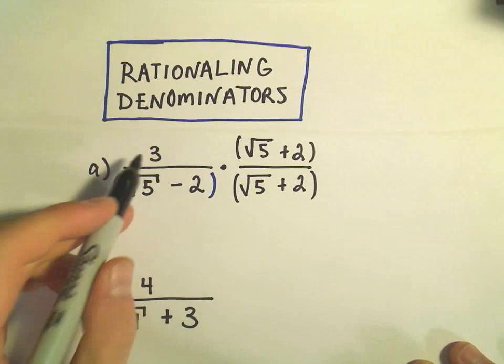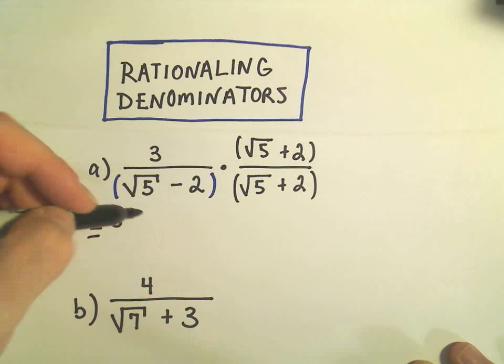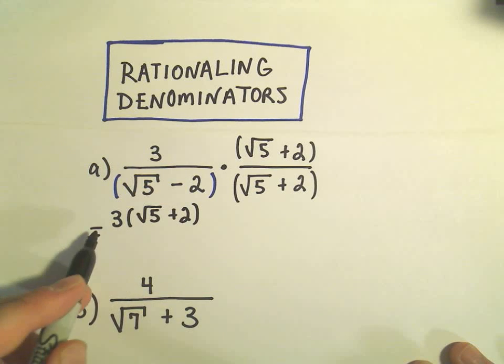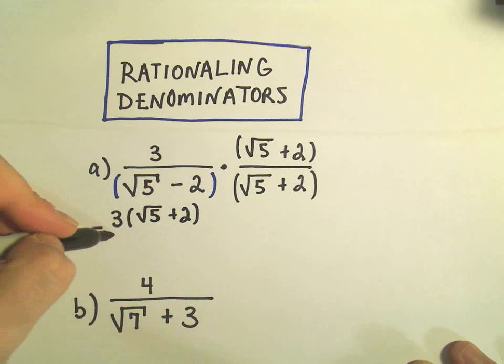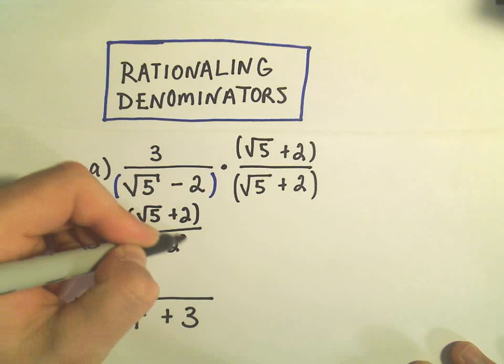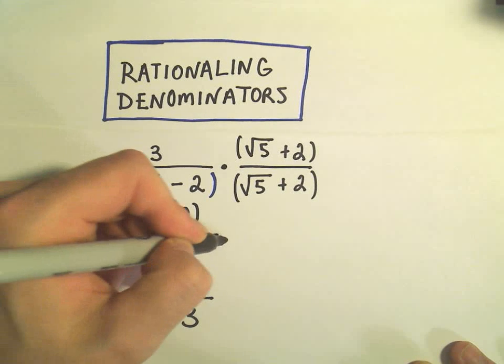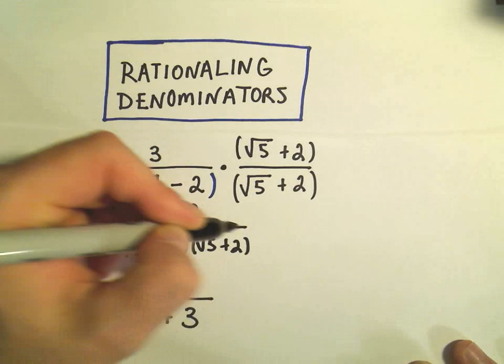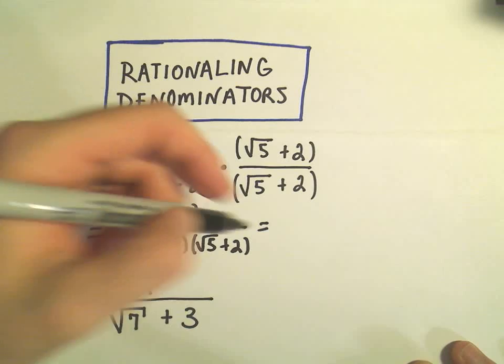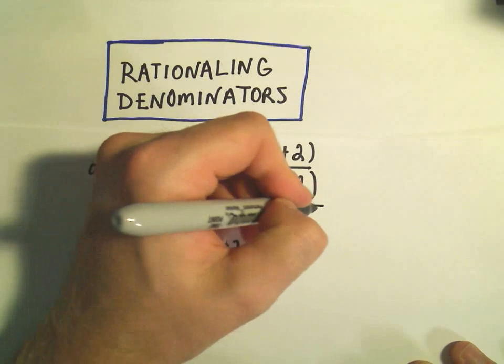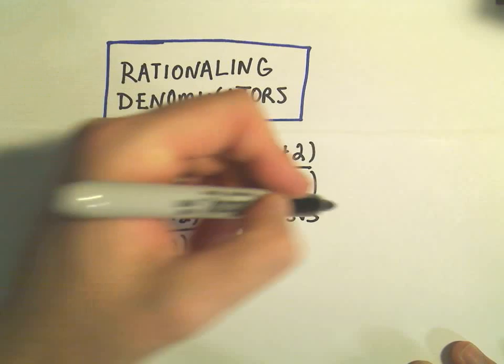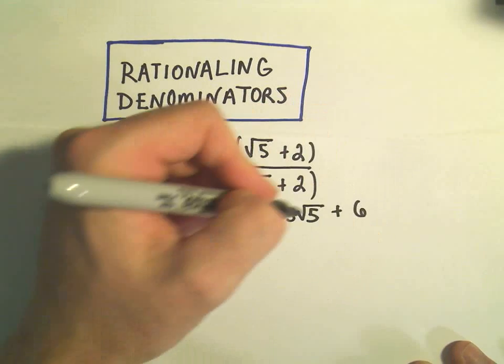So I'm going to write it one time. So when we multiply fractions, we just take the top, we just multiply what's on top. So 3 times the quantity root 5 plus 2, and then we just multiply what's on the bottom. Root 5 minus 2, root 5 plus 2. And we have to be careful here, we'll have to distribute. So 3 times root 5 is simply 3 root 5, there's not a lot to do. And then 3 times positive 2 will be positive 6.